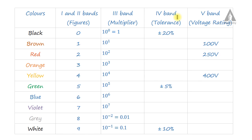The fourth band is tolerance. Black is plus or minus 20%, white is plus or minus 10%, and green is plus or minus 5%.